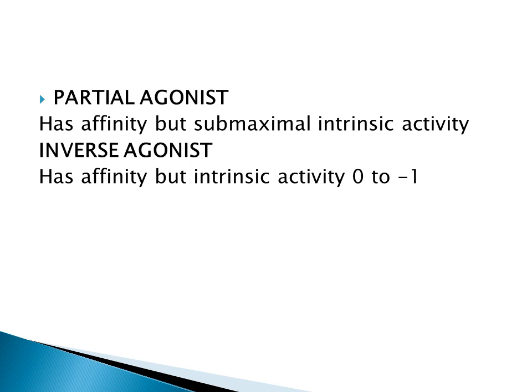A partial agonist is a substance which has affinity for the receptor but sub-maximal intrinsic activity — that is, less than the maximal intrinsic activity of a full agonist. If a substance has affinity for the receptor but its intrinsic activity is less than that of a full agonist, it is known as a partial agonist. An inverse agonist has affinity for the receptor but its intrinsic activity is negative, ranging from 0 to minus 1.